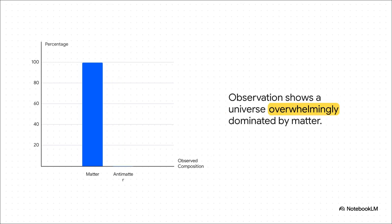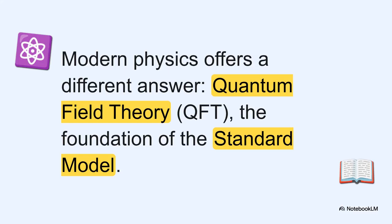But when we look out at the universe, that's not what we see. Not at all. Our universe is overwhelmingly made of matter. Antimatter is incredibly rare. And this isn't some small error in the calculation. This is a catastrophic failure of the model. The prediction isn't just wrong. It's about as wrong as it could possibly be.